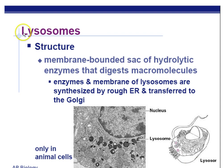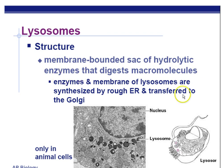Lysosomes: the prefix 'lyso' means break apart, and 'soma' means little body. These lysosomes are membrane-bound sacks of hydrolytic enzymes — using water to break things apart — that digest macromolecules. Enzymes and membranes of lysosomes are synthesized by the rough ER and transferred to the Golgi, so lysosomes come from the rough ER and Golgi. They're involved with recycling in the cell, and they're only found in animal cells. Plant cells don't have them — their enzymes are just floating around in their cytoplasm.